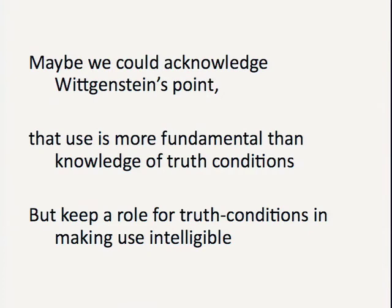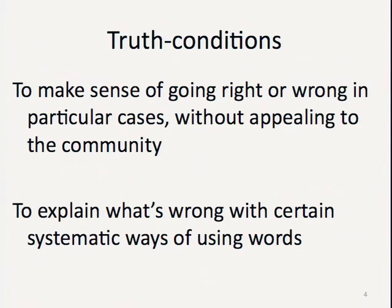You have to have some picture in your mind of what makes a statement involving the sign true or false. With tonk, there's a use for the sign — the use can be perfectly well described. But it's very difficult to make intelligible what you think you're up to when you're using the sign. You can't have any truth table for it; you can't make any sense of what is going on there. Using the sign is the more basic thing, but you've still got to be able to say what it takes for uses of those signs and sentences to be true or false.